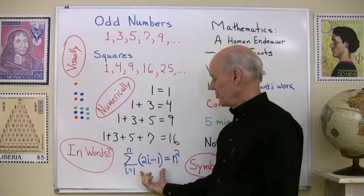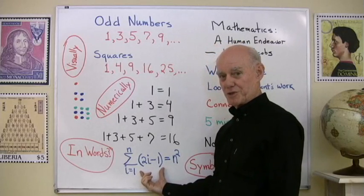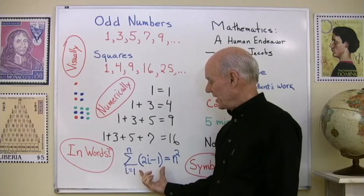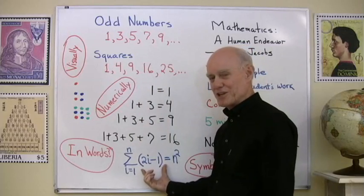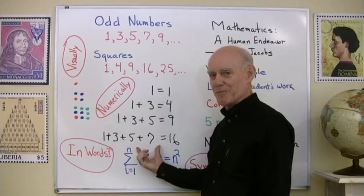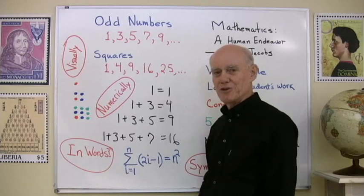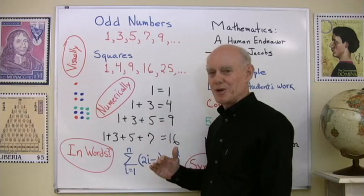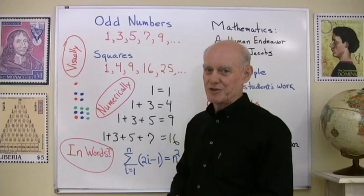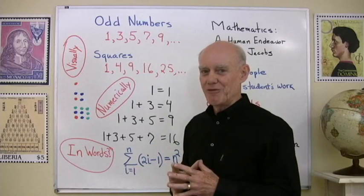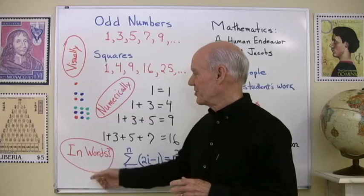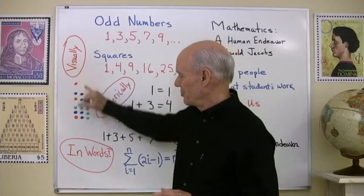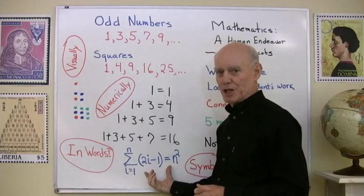Later on in the course, if we get to sequences and series, we can do it symbolically — here's a nice compact symbolic representation of this relationship. Now how about the fourth way: doing it in words? Fibonacci did that for us. It's that first paragraph we read from Fibonacci's Book of Squares. So here we have an idea in mathematics presented four different ways: numerically, visually, in words, and symbolically.